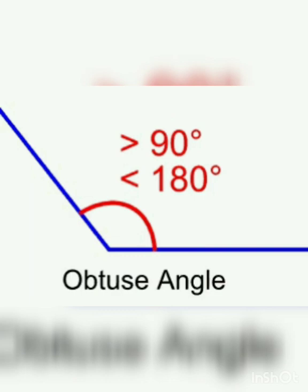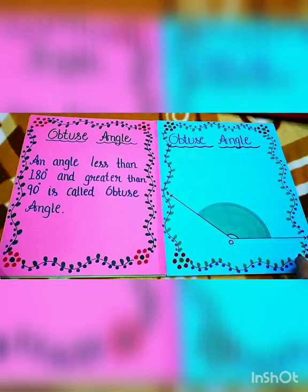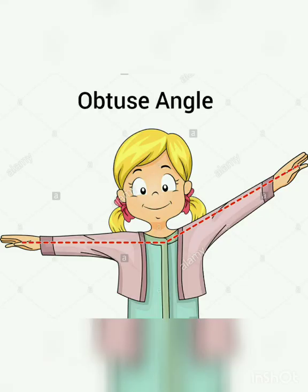After that it is obtuse angle. An angle which is greater than 90 degrees and less than 180 degrees is called an obtuse angle. In this diagram, the girl is making an obtuse angle with her arms.